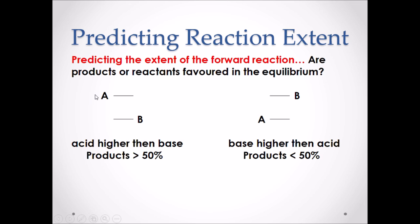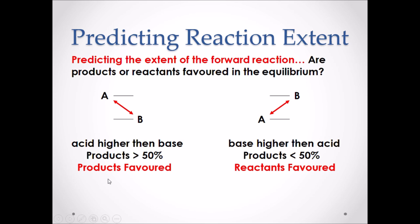We can also predict the extent of the reaction — are the products or reactants favored in the equilibrium? We have to refer to our strengths of acids and bases table in the CHEM30 data booklet and compare the two reactants. If the acid is vertically higher than the base on our data table, then we assume the reaction is product favored, meaning the products will be greater than 50%. If the base is vertically higher on the table than our acid, then we assume the equilibrium is reactant favored, meaning the products form less than 50%.